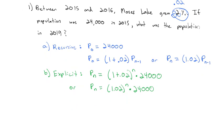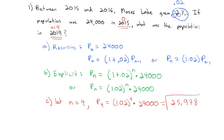Now that we have an explicit formula, we can find any given year by letting n equal the number that represents that year. We're starting in 2015, so 2015 is considered year 0. We need to get to 2019, which is four years after 2015. So we'll let n equal 4. For the fourth year, we have 1.02 to the fourth power times 24,000. When we do that, we get 25,978 approximately is the population in 2019.